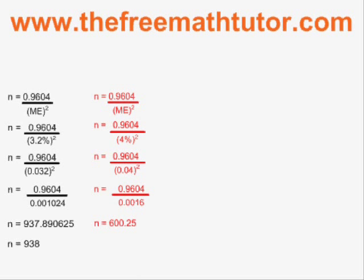Here is an example where we have to round up where the numbers would normally have us round down to 600. Instead, we will round our answer up to 601 because we do not want a margin of error slightly more than 4%. It's okay if it's slightly less than 4%.